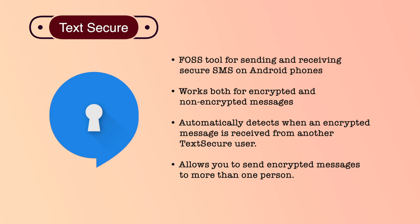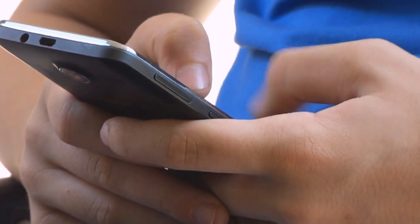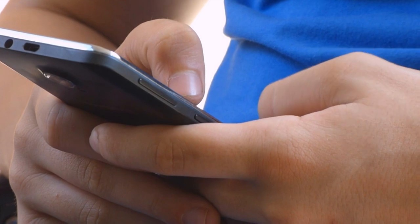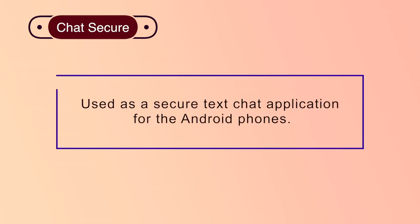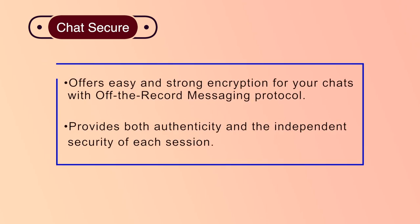Instant messaging and chatting on your phone can produce a lot of information that is at risk of interception. These conversations might be used against you by adversaries at a later date. You should therefore be extremely wary about what you reveal when writing on the phone while instant messaging and chatting. ChatSecure is an application that can be used as a secure text chat application for Android phones. ChatSecure offers easy and strong encryption for your chat with the Off-the-Record messaging protocol. This encryption provides both authenticity and the independent security of each session, so that even if the encryption of one chat session is compromised, other past and future sessions will remain secure.